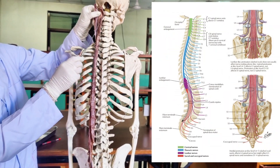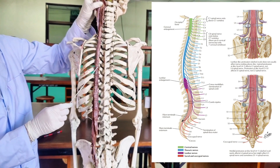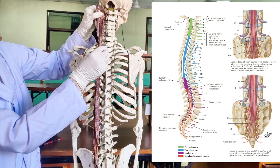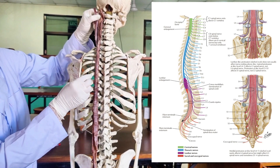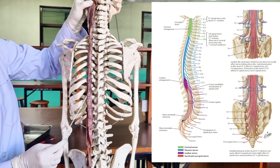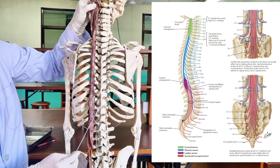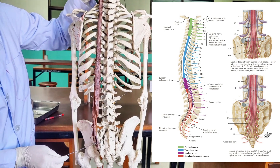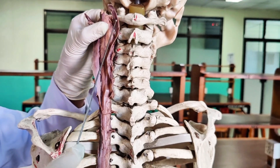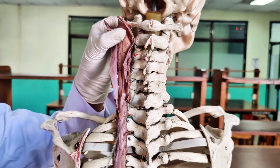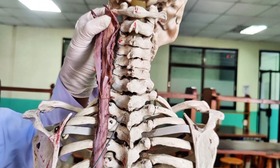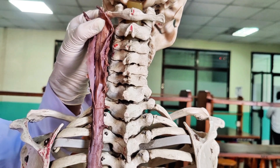There are 8 cervical spinal nerves, 12 thoracic nerves, 5 lumbar, 5 sacral, and 1 coccygeal nerve. Although there are only 7 cervical vertebrae, there are 8 cervical nerves. The cervical nerves leave the vertebral canal above the corresponding vertebra, with the exception of the eighth, which leaves between the seventh cervical and the first thoracic vertebra. The remaining spinal nerves emerge below the corresponding vertebral levels.